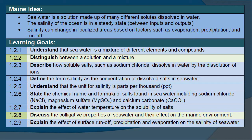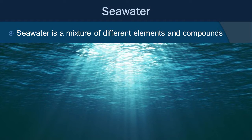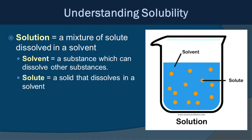We're going to be covering all of the specific learning goals listed on this table. If you've ever been to the beach or in the ocean, you've probably had seawater in your mouth and noticed it tastes salty. Seawater is a mixture of different elements and compounds — quite a lot of stuff in there. To understand that, we have to understand solubility. A solution is a mixture of a solute dissolved in a solvent. The solvent is a substance which can dissolve other substances — hint: water. A solute is a solid that dissolves in a solvent.